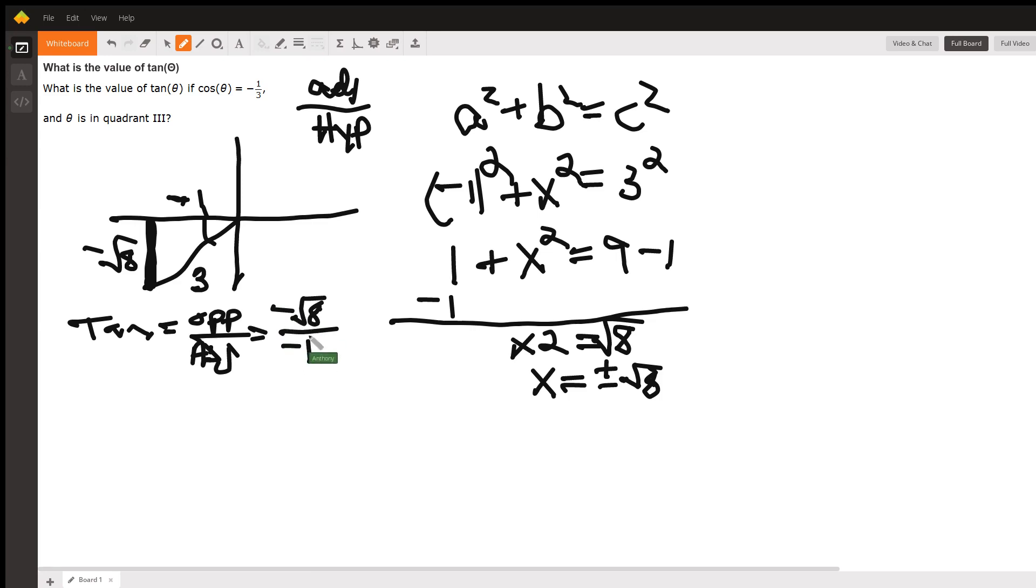And so this ends up equaling that the tangent of theta is the square root of eight, which would be positive, which falls in line with tangent is positive in quadrant three, using the 'All Students Take Calculus' mnemonic device to help you remember where it's positive.